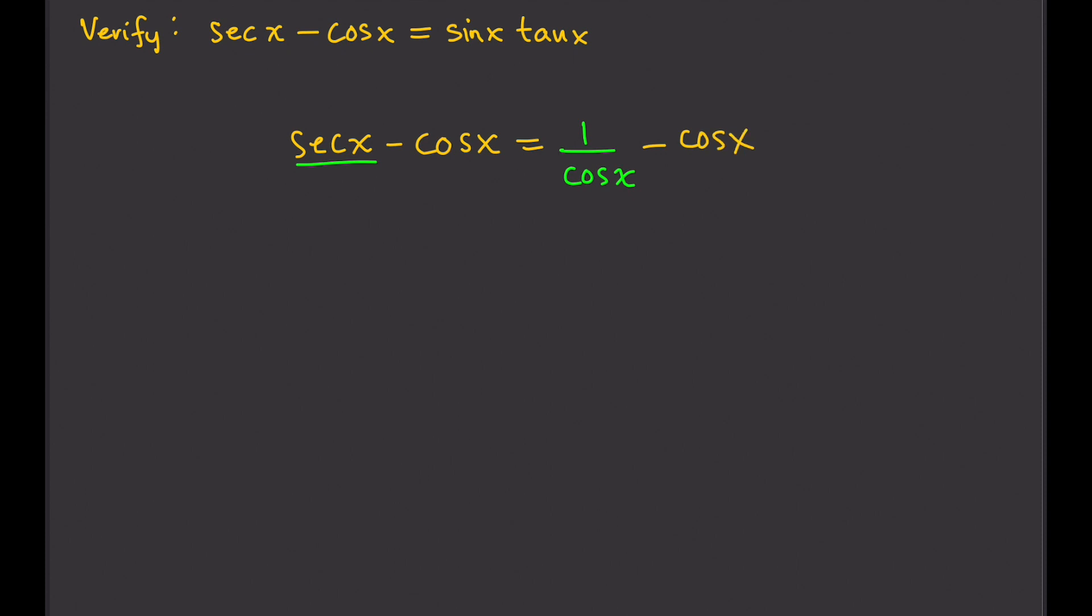Okay, then we will try to simplify. So the next step will be to write this as a single term, a single fraction. Find the LCD. The LCD is cosine x.